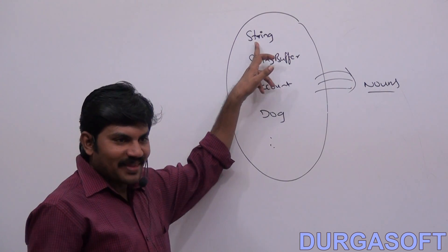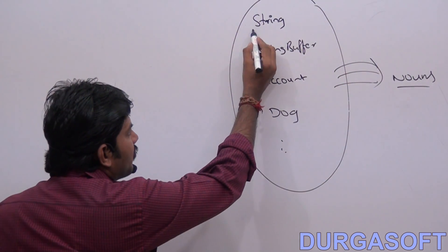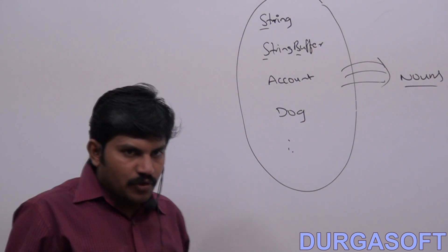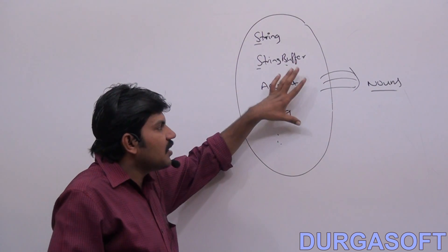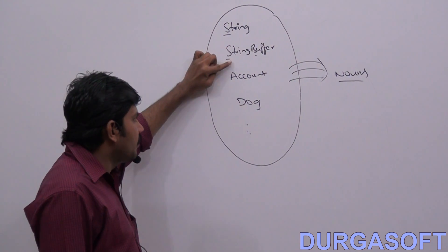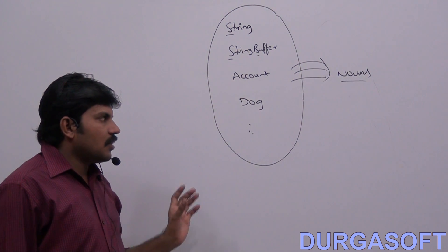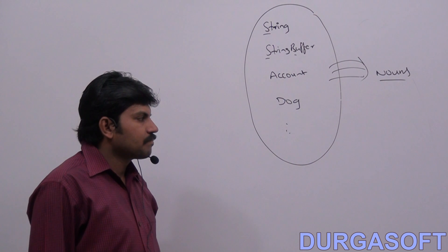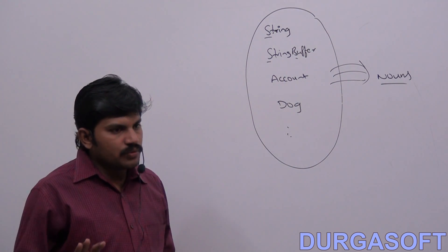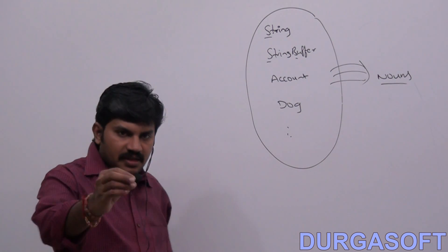Usually String, StringBuffer, Account, Dog — these are nouns. Class names are nouns, and they should start with an uppercase character. If a class name contains multiple words, every inner word should also start with an uppercase character. This is the convention we have to follow for classes — for example: String, StringBuffer, Account, Dog.